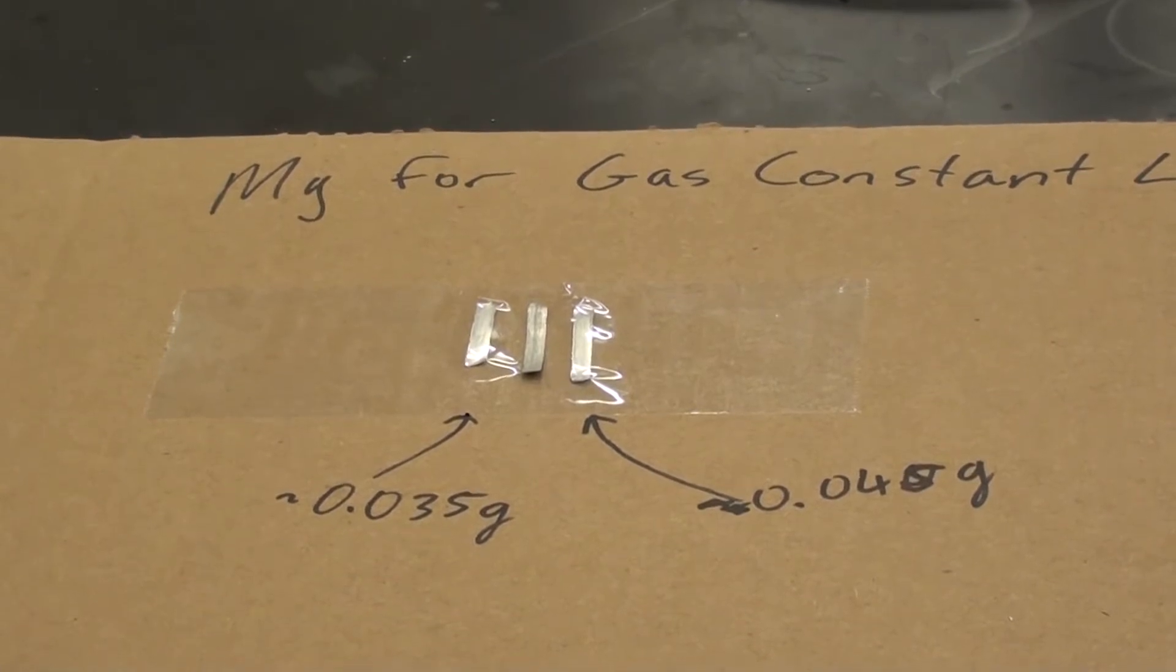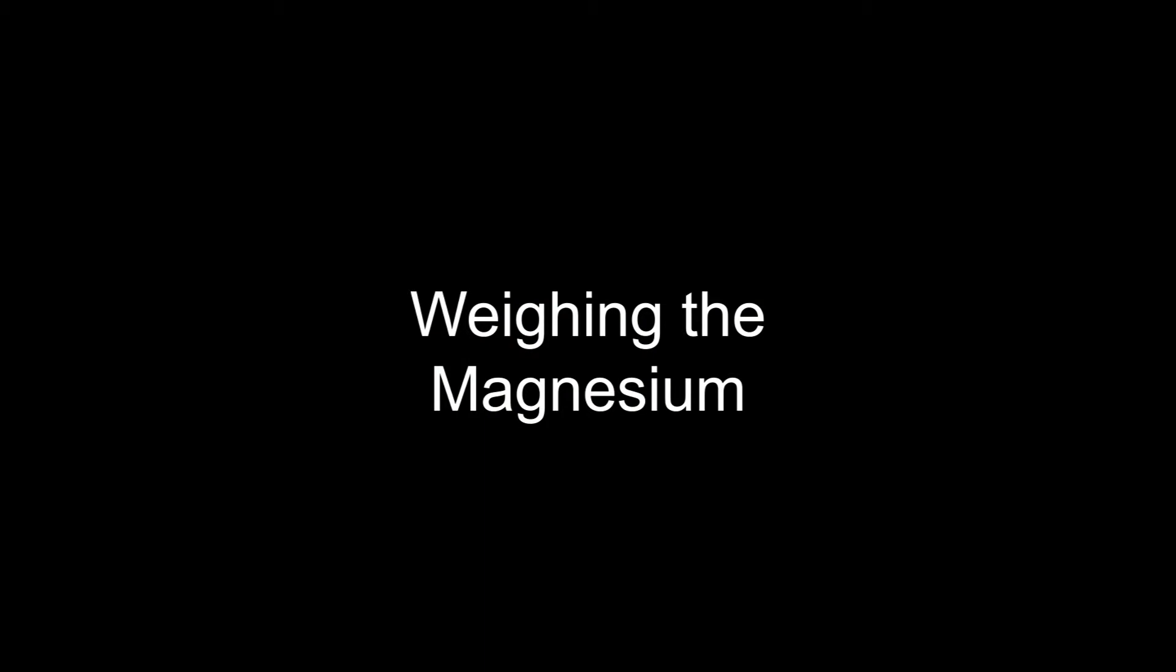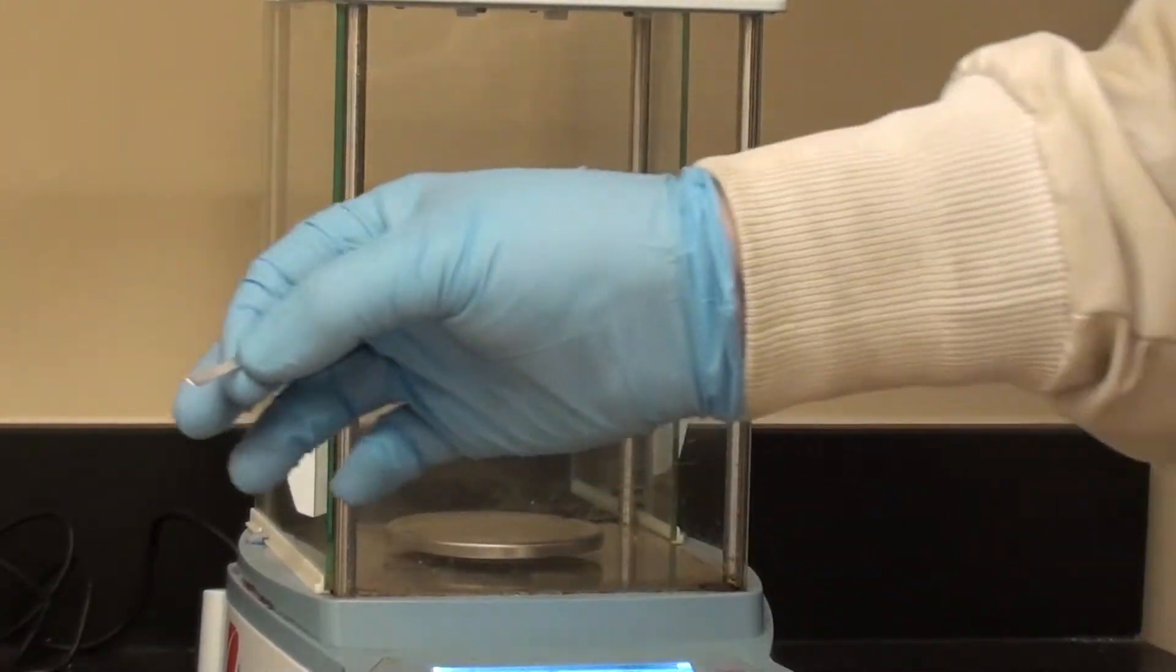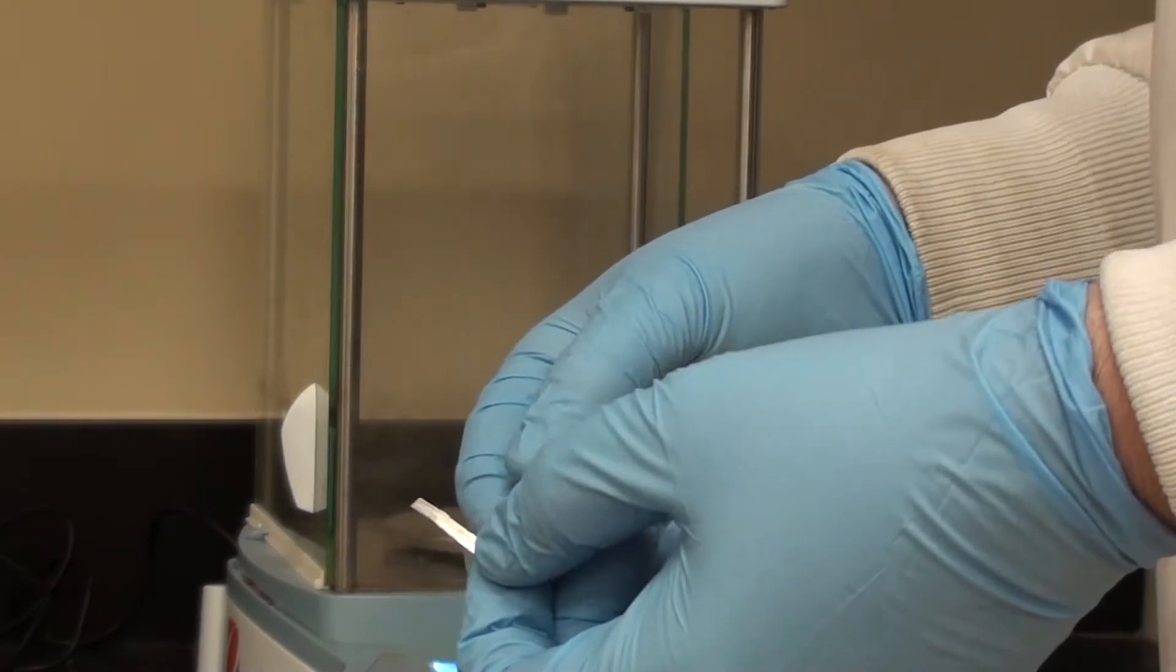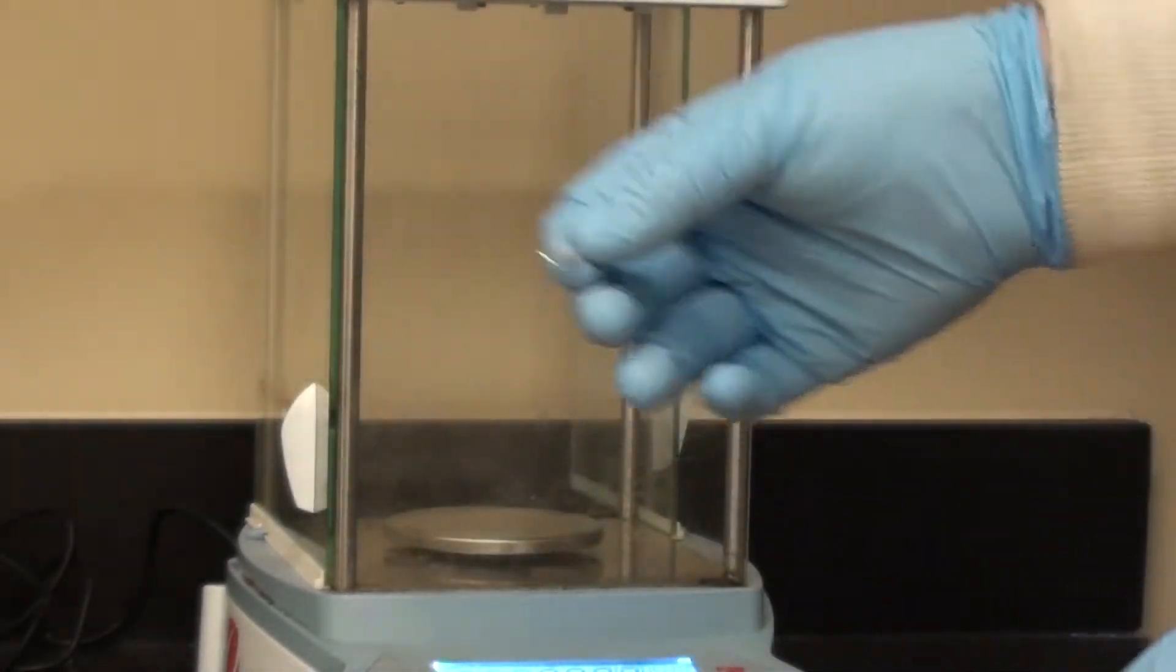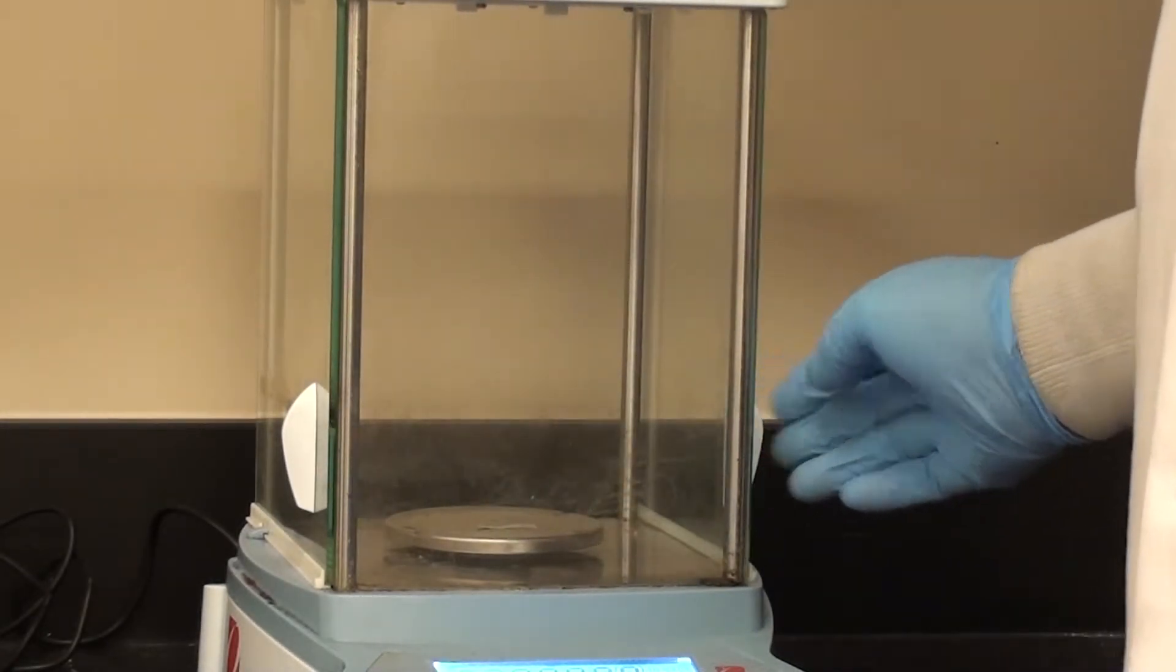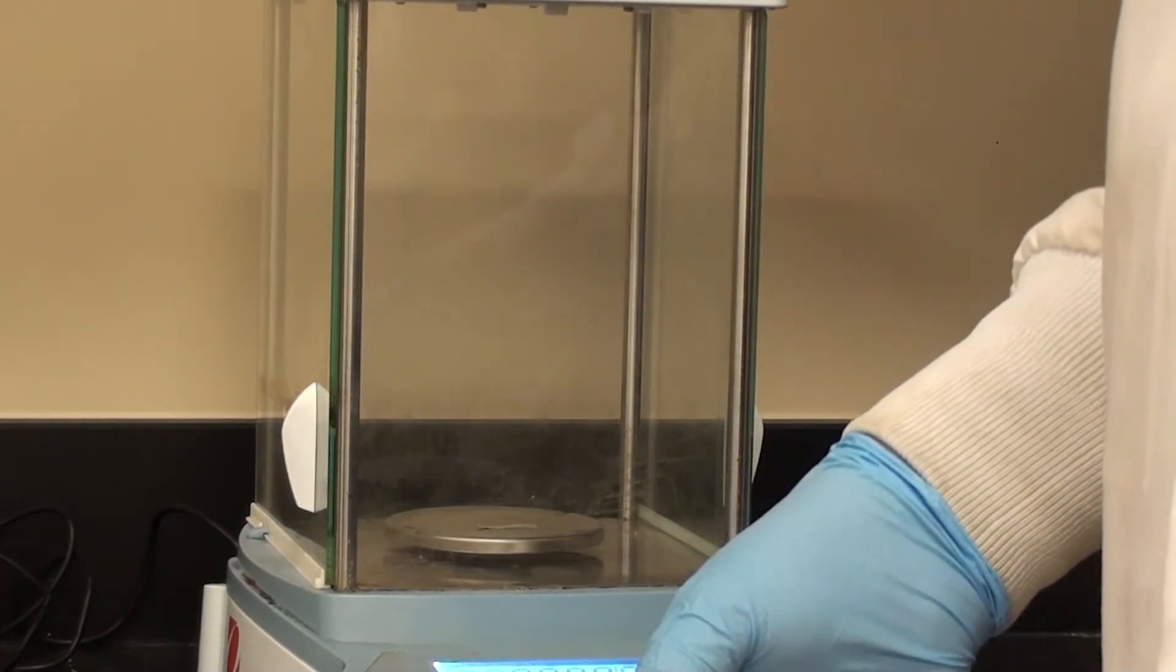So now we're going to take that and weigh it. Here's my cut piece of magnesium. It says in the directions it's probably a good idea to sand it as well, that's before you weigh it. Then after you've sanded it, you can put it on the balance. And just note the mass, it should be somewhere between 0.035 grams and 0.045 grams.